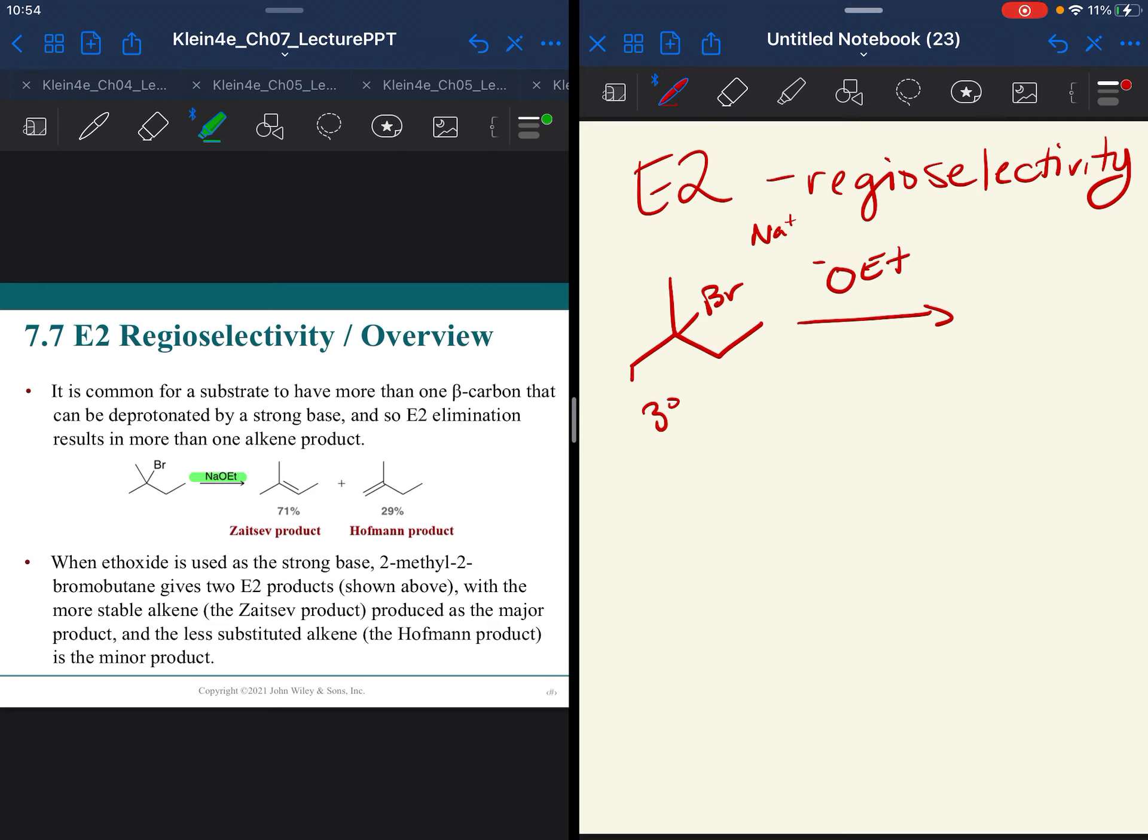But there are protons on all of the beta-carbons. And these two will lead to the same product. If we remove that, we are going to make a di-substituted alkene. There are two R-groups on that double bond.